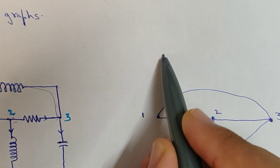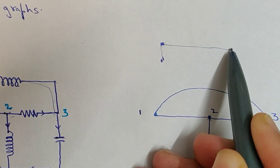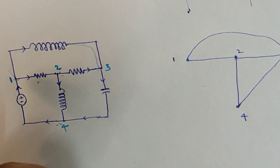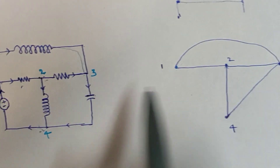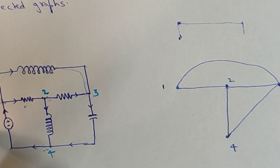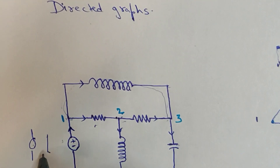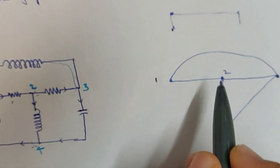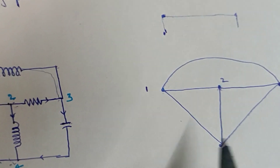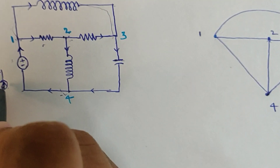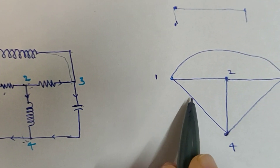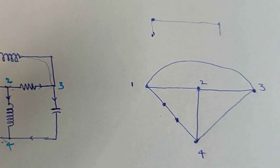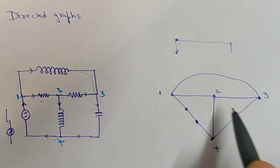I have drawn a curved line between one and three to avoid creating additional intersection points. Now, for the voltage source in a directed graph: a voltage source becomes a short circuit and is represented by a line. If there were a current source instead, it would become an open circuit and would not be represented by a line. Since we have a voltage source here, it is short circuited and shown as a line. This completes the normal graph of this network.